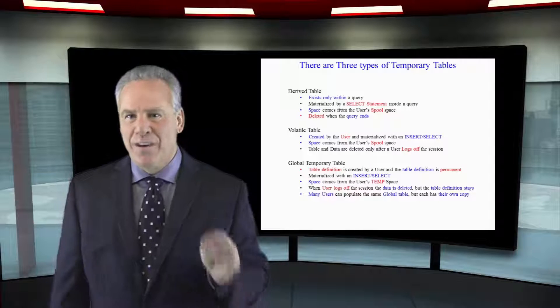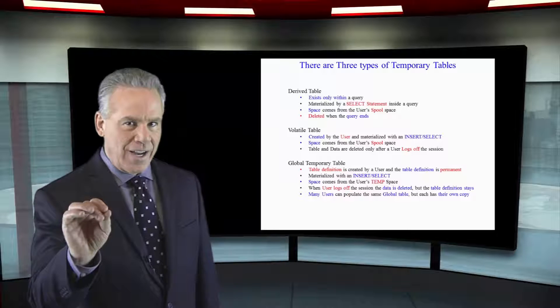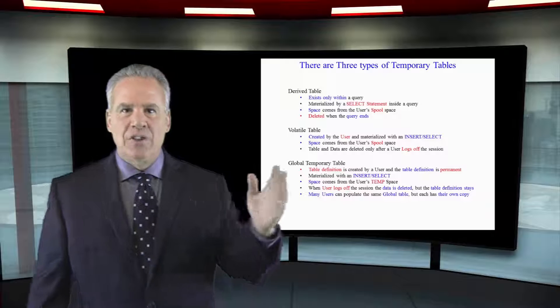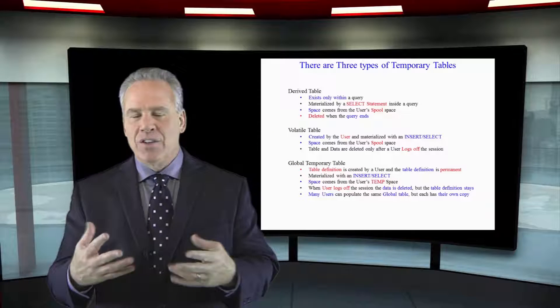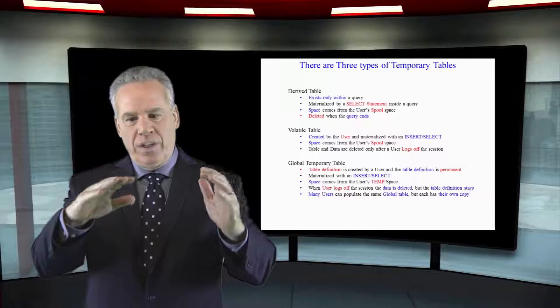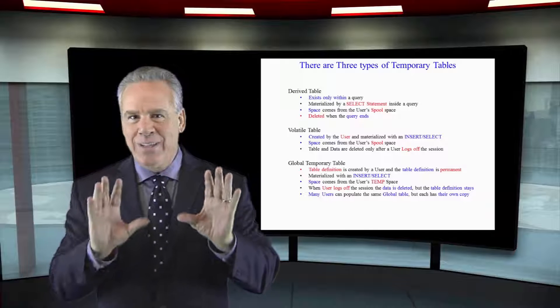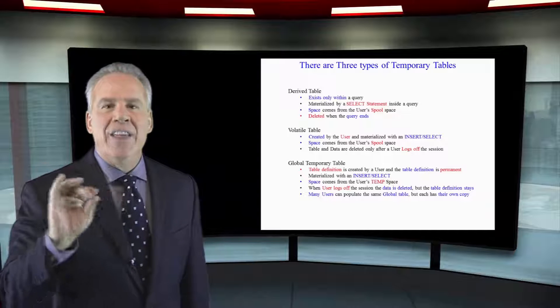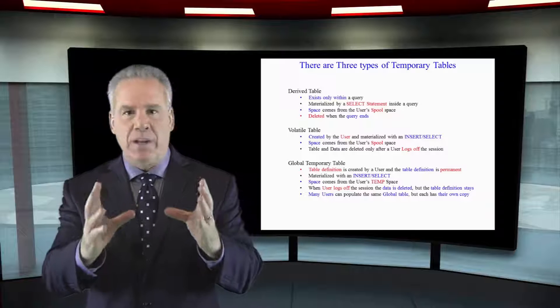There are three types of temporary tables: derived tables, volatile tables, and global temporary tables. Now, let's talk about each of these three logically so you have a feel for what we're going to discuss. A derived table is built inside parentheses inside your SQL. It only lives for the life of that query only, and then it is gone. You will use your spool space to create and populate it.